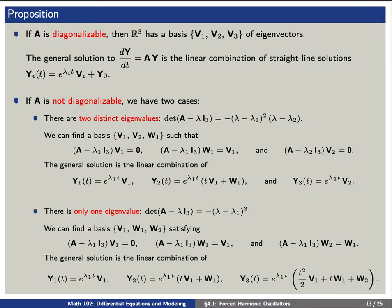If A is a diagonalizable matrix, then we can find the basis of eigenvectors V1, V2, and V3. Then we can express the general solution to our three-dimensional system as a linear combination of straight-line solutions of the form e^(lambda*t) times V plus y0. However, if A is not diagonalizable, we have two cases to consider.